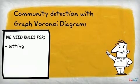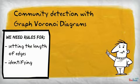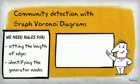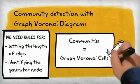We need rules for setting the length of edges and choosing the generator nodes. Then communities can be identified as the graph Voronoi cells.